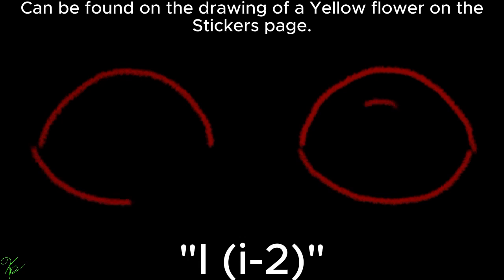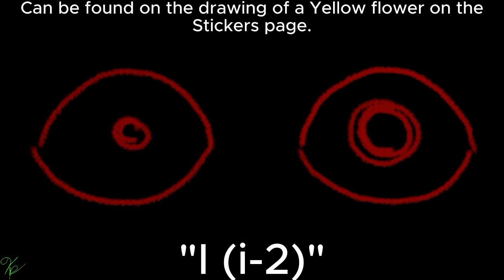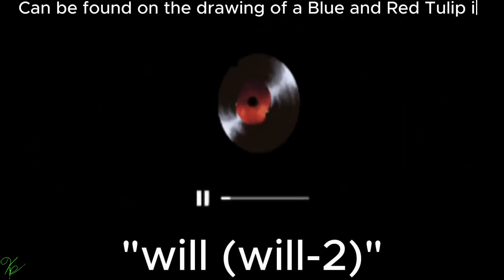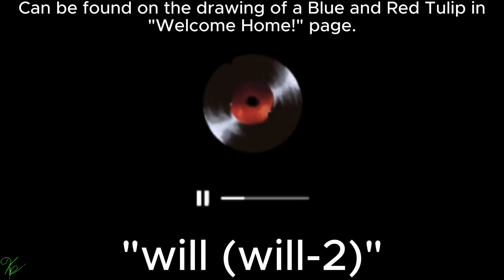First, you draw a circle. Then, you draw a smaller circle inside. Then, you color it in. That's what an eye looks like.